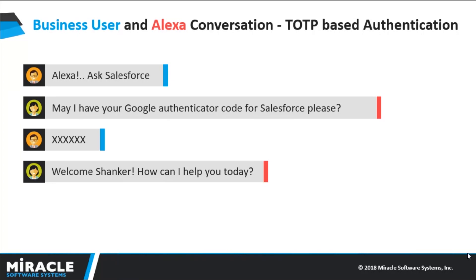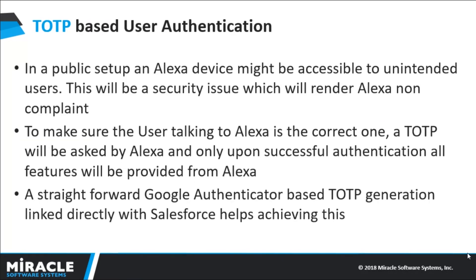In an office setup, Alexa will be available to all users who can speak. Given the technological limitation on voice identification, any user could ask Alexa to update data on Salesforce, which would raise compliance concerns. To avoid that, I have enabled a time-based one-time password (TOTP) on my Salesforce user, integrated with the Salesforce Lambda function. The user will have to provide the six-digit TOTP to the Alexa skill before performing any operations on Salesforce. In the demo, I will showcase how this works in detail.